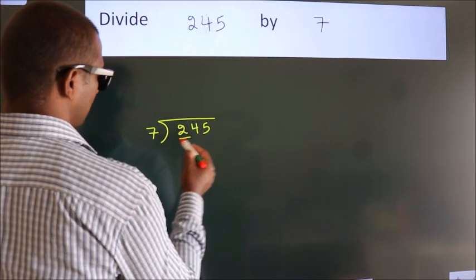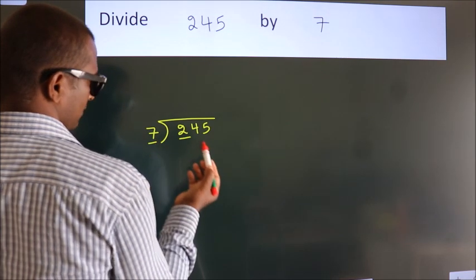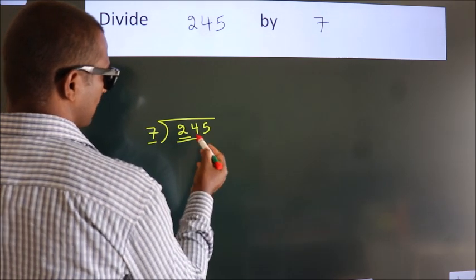Here we have 2. Here 7. 2 is smaller than 7, so we should take 2 numbers: 24.